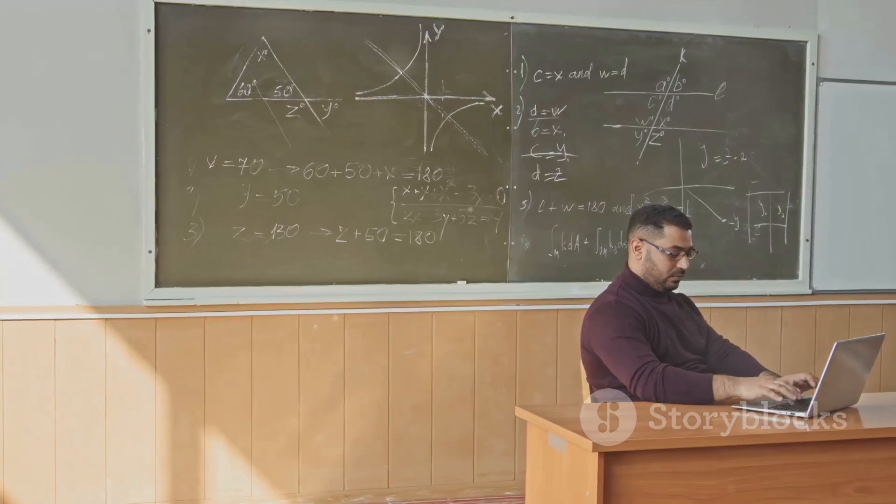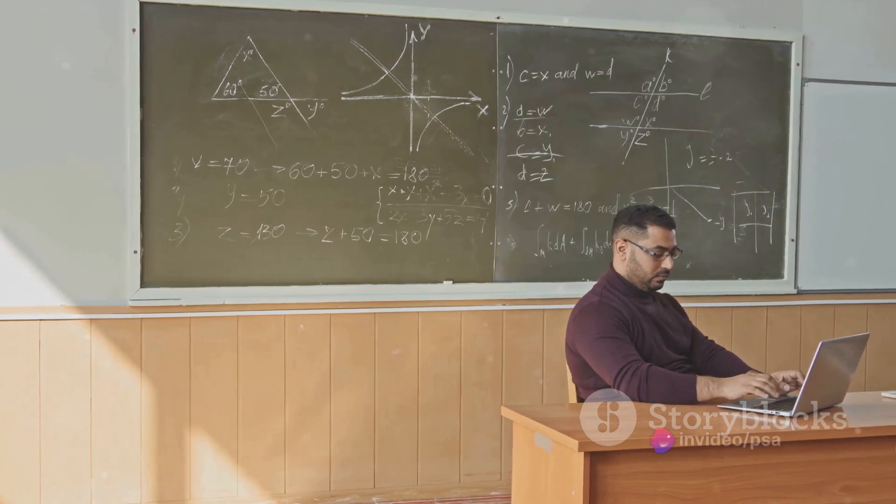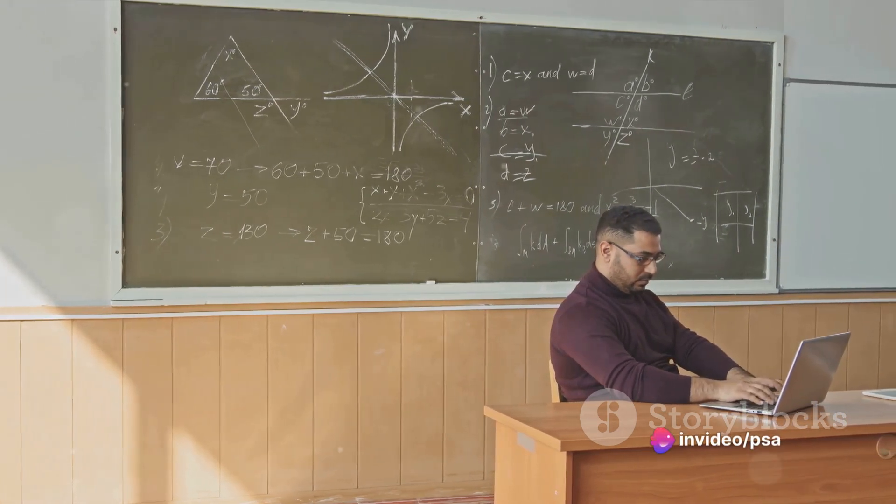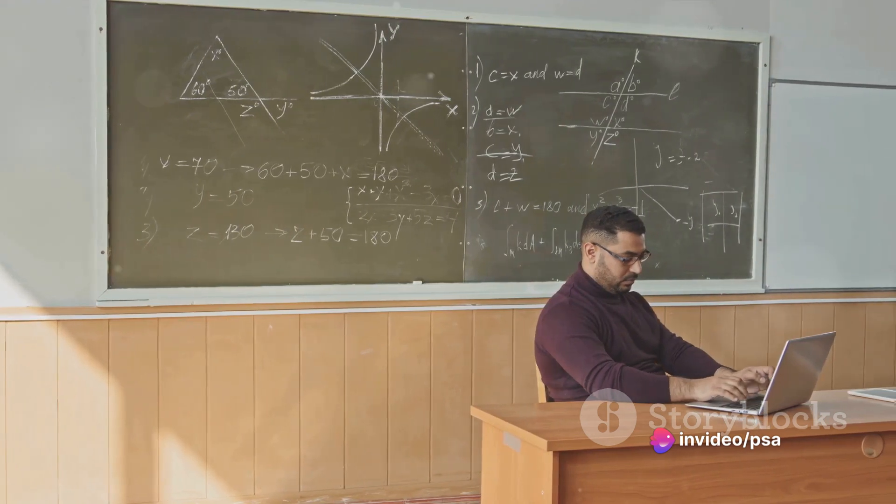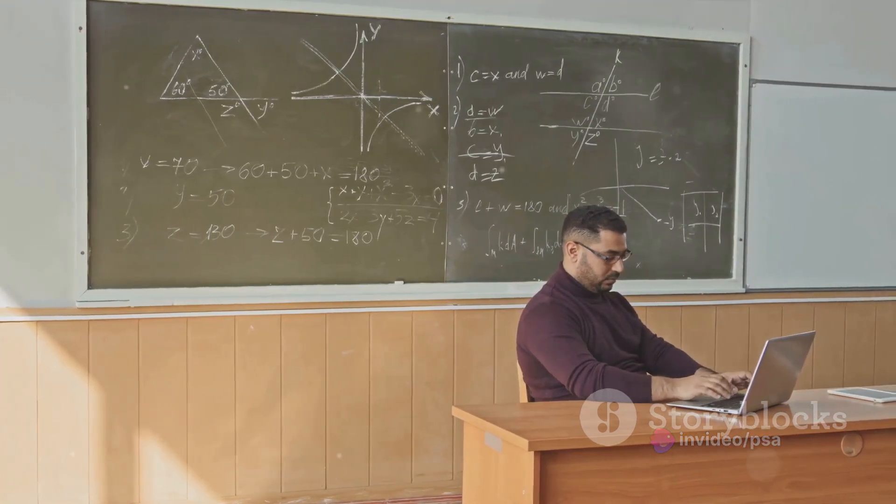Then we have the quotient identities, which express the tangent and cotangent functions in terms of sine and cosine. For example, the tangent of an angle equals the sine of that angle divided by its cosine.